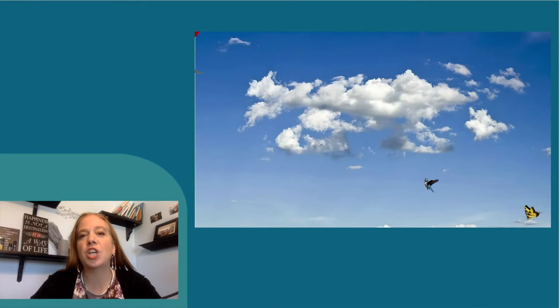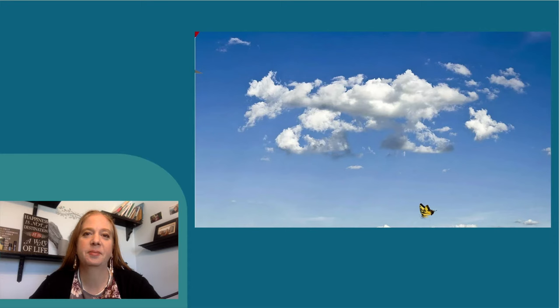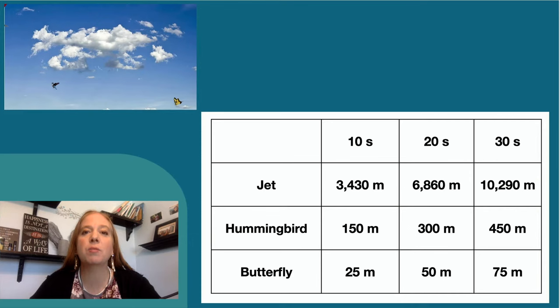Let's check out this jet, hummingbird, and butterfly. Here's a data table to show how far they moved in 30 seconds. But what would it look like on a graph?